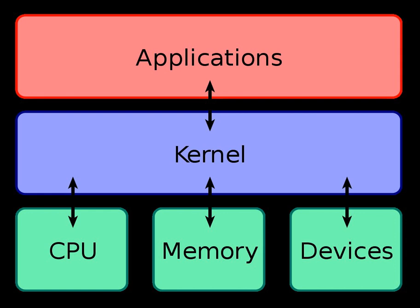The disadvantages for microkernels are extremely context-based. They work well for small single-purpose systems because if not many processes need to run, then the complications of process management are effectively mitigated. A microkernel allows the implementation of the remaining part of the operating system as a normal application program written in a high-level language, and the use of different operating systems on top of the same unchanged kernel. It is also possible to dynamically switch among operating systems and to have more than one active simultaneously.